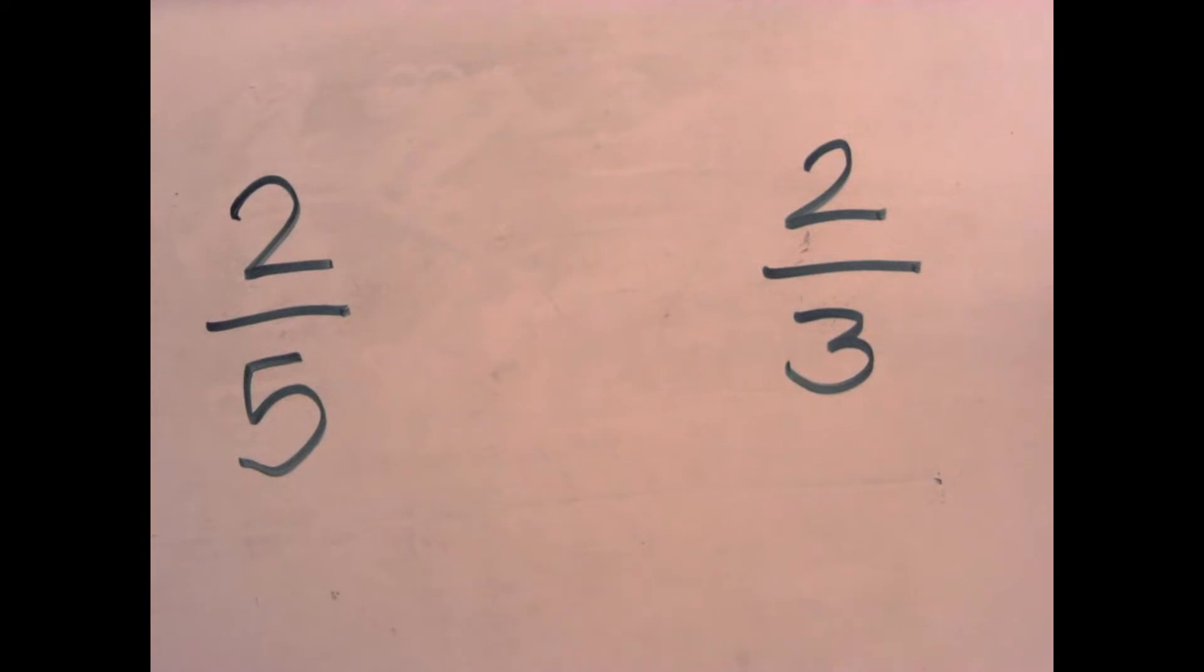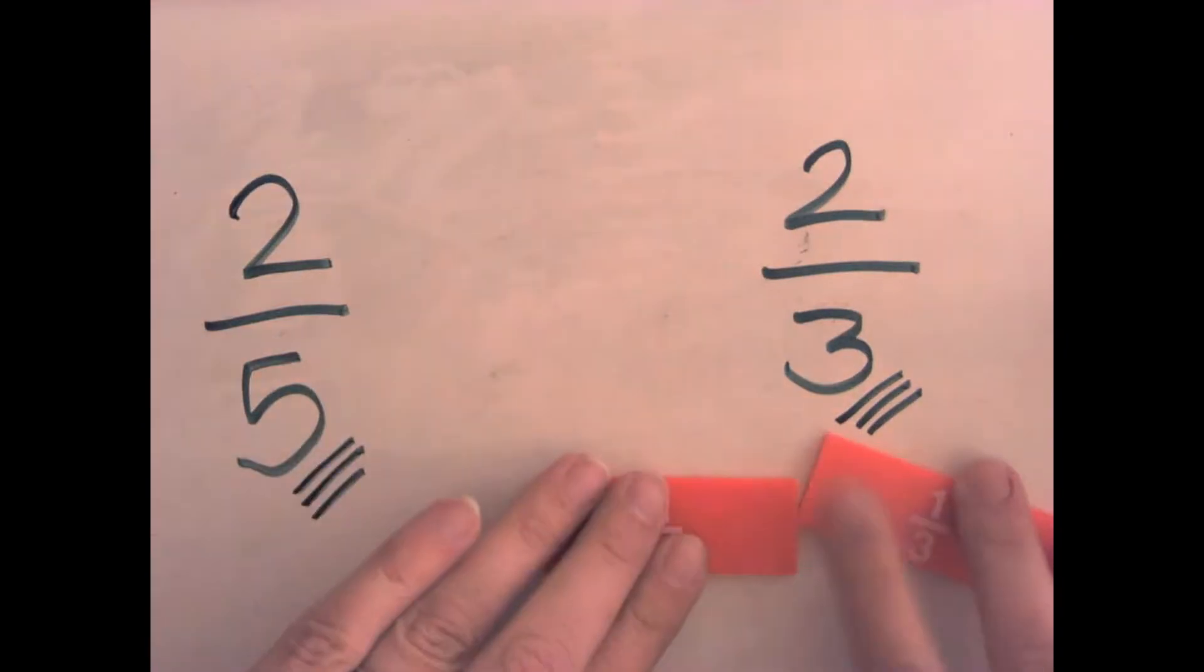How do we compare fractions with the same numerator? We have two-fifths here and two-thirds here. When we have the same... Now we're going to start talking about birthday cake some more. We have fifths here. We have thirds here. So if I have a birthday cake, and it's the same size birthday cake, cut into three pieces, those pieces are going to be bigger, because I have less cuts. We've been talking about this. The more cuts you make, the smaller the pieces are.